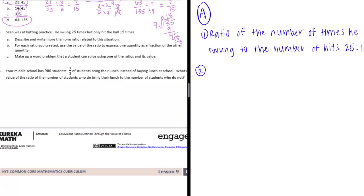Another one. We can just reverse that. So we could say ratio of the number of hits to the number of swings. That would be 15 to 25.